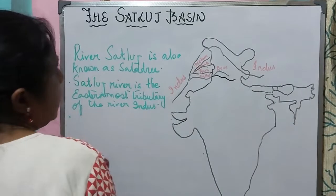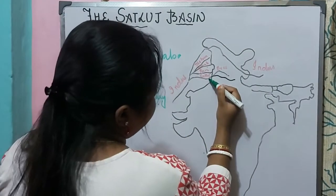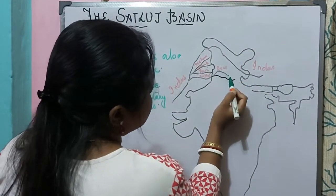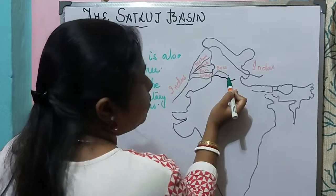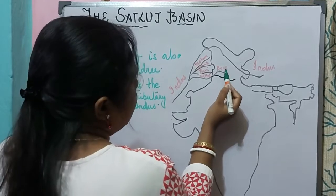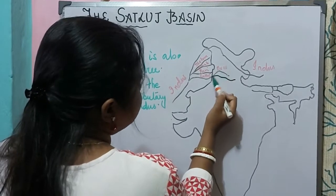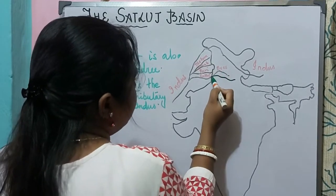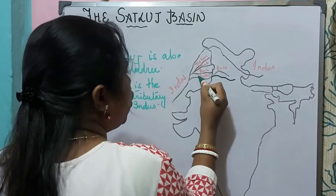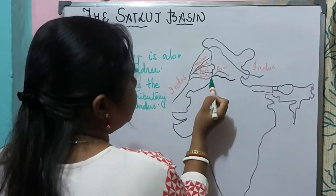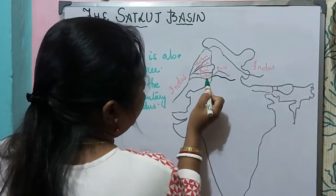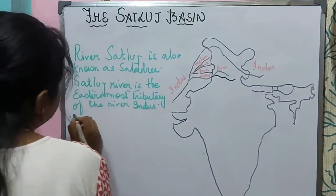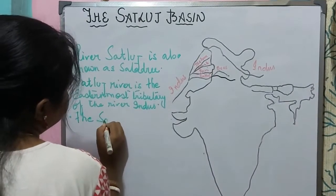The Satluj river meets with the Beas in Punjab. As they meet, the Satluj and Beas together flow towards the southwest.